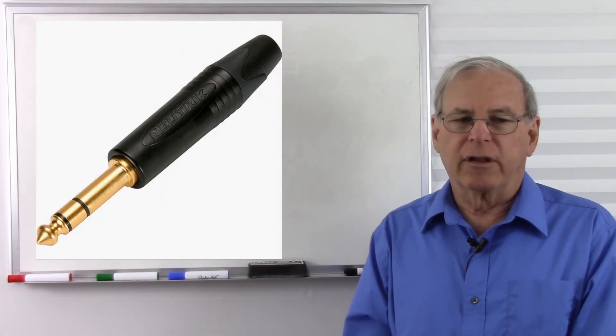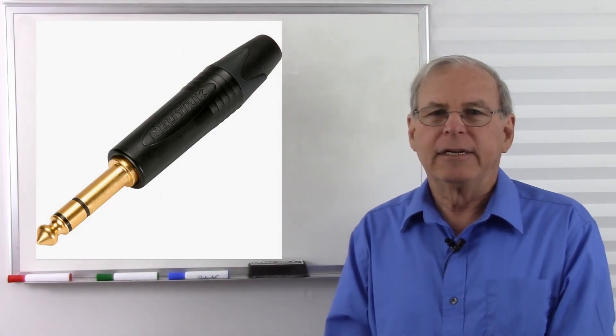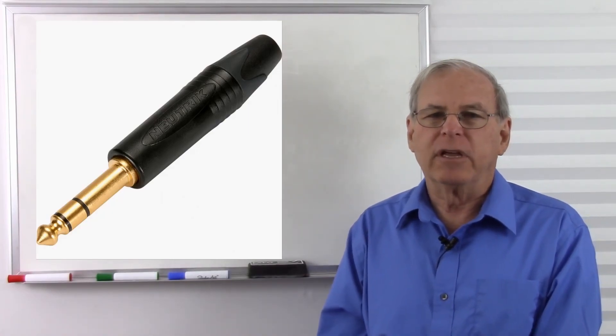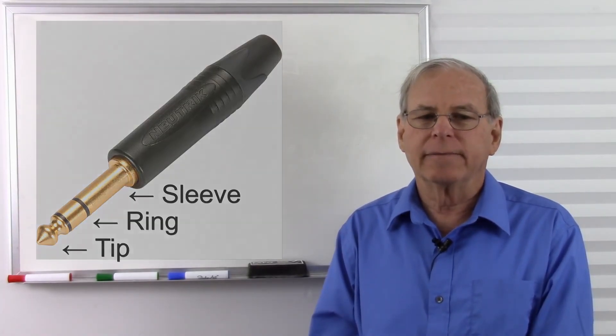This was also used in phone circuits, and you might hear people talking about phone circuits, everybody talk about tip, ring, and sleeve. And that's the names of the different parts of the phone plug. We have the tip, the ring, and the sleeve of the phone plug.